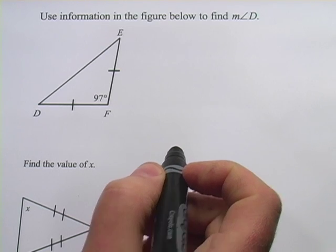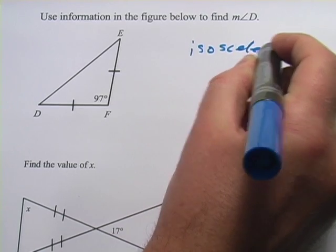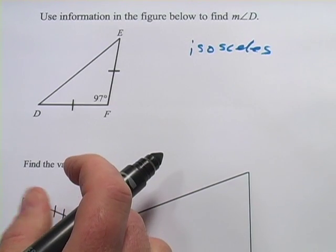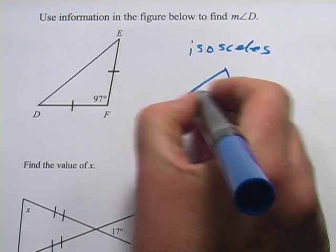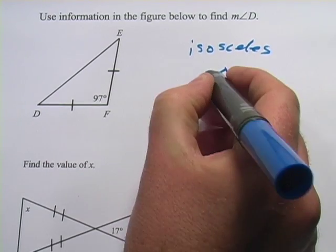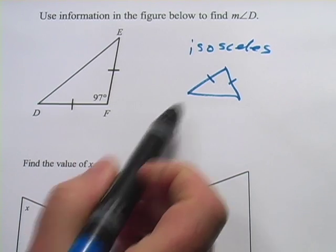In these problems, we're dealing with a special kind of triangle called an isosceles triangle. And the thing about an isosceles triangle is it has two sides that are the same. I'm just going to draw it this way here with these two sides here. So those little hash marks mean those sides are the same length.